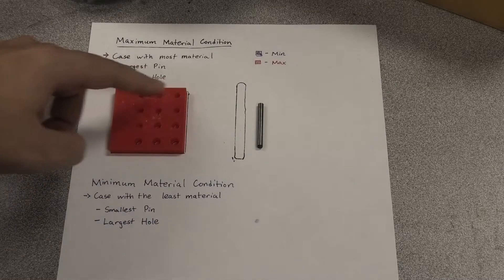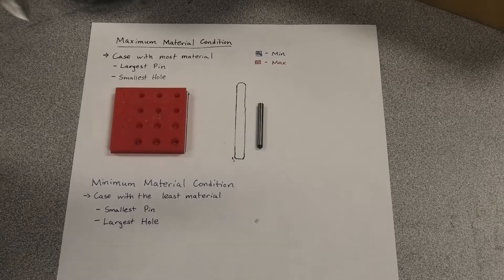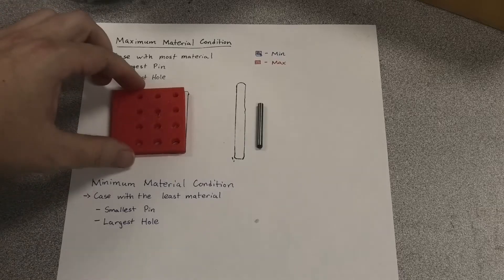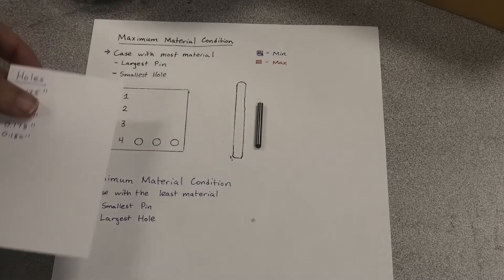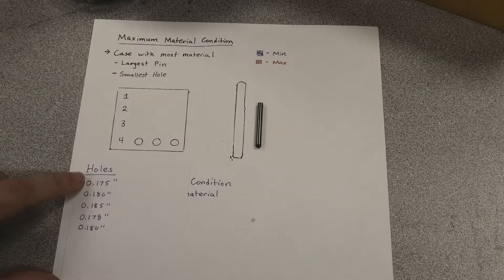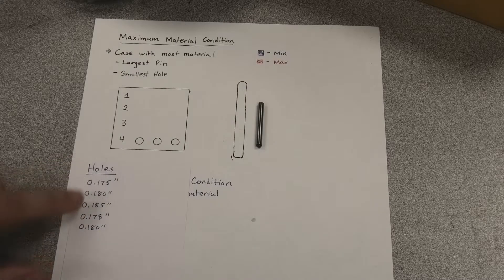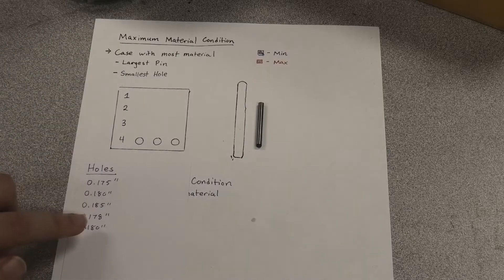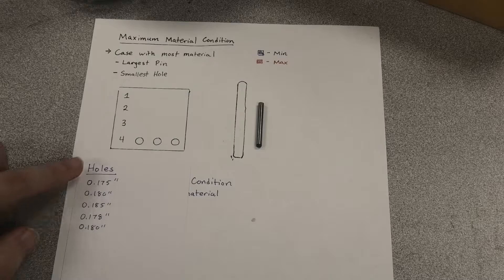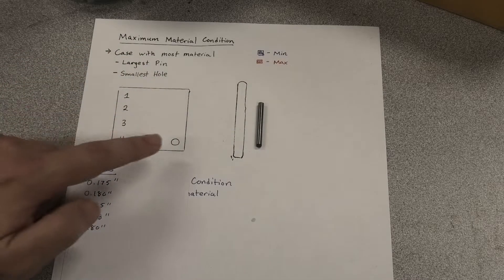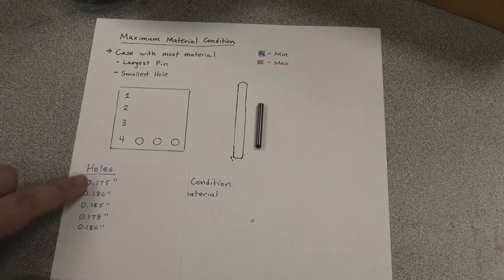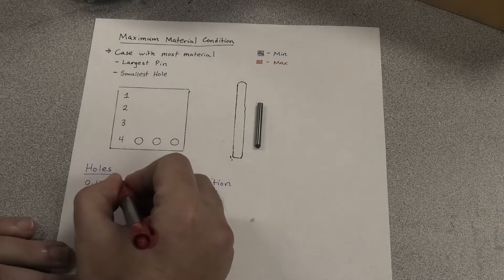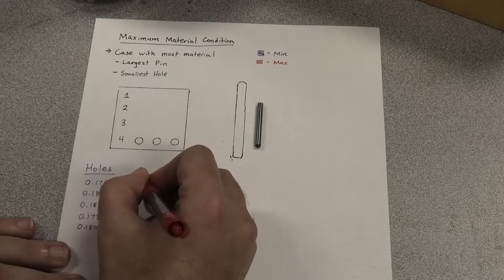I went ahead and measured a couple of these holes at the top using the caliper backside to make hole measurements. What we came up with was that we have a couple of different variations: the holes are 175 thou, 180 thou, and 185 thou. So there is some variation occurring inside these holes. The maximum material condition of these holes is going to be the smallest hole — so 0.175 is going to be the maximum material condition.